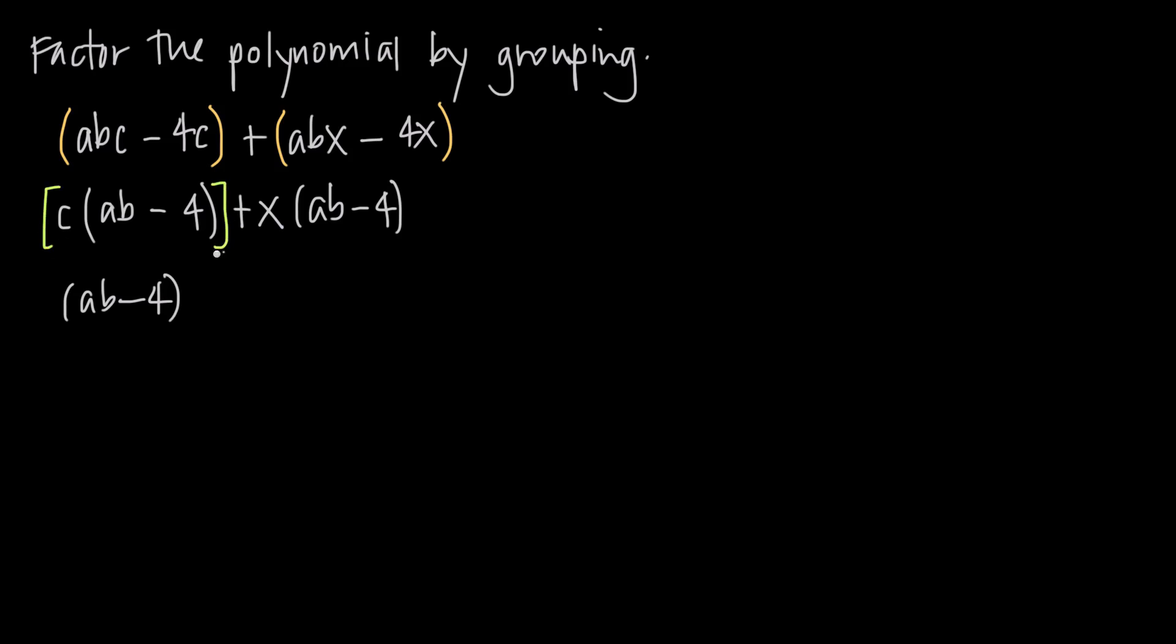Well, if we look at this term and we take out the AB minus 4, we're just left with C. So we want to say AB minus 4 times quantity C. We keep the plus here. And then when we look at the second term here, we have X times quantity AB minus 4. We take out the AB minus 4 and we're just left with the X. So we have C plus X. That's all that's left over. Now this is our final answer.